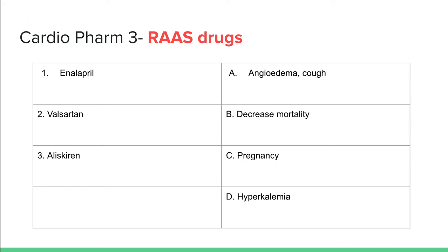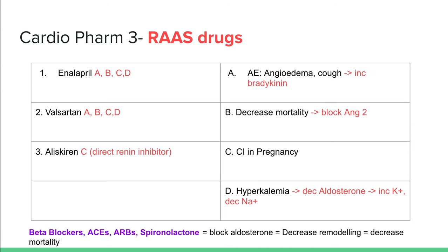Pharm slide three covers RAS drugs — the renin-angiotensin-aldosterone system drugs. Enalapril is your ACE inhibitor; remember, ACE inhibitors end in -pril. Adverse effects of ACE inhibitors include angioedema and cough, because they tend to increase bradykinin. All RAS drugs that antagonize aldosterone help decrease remodeling, reducing fibrosis and decreasing mortality — along with spironolactone and beta blockers. All RAS drugs are contraindicated in pregnancy and tend to cause hyperkalemia due to decreased aldosterone effects.